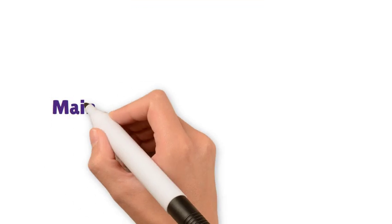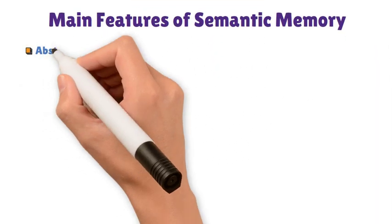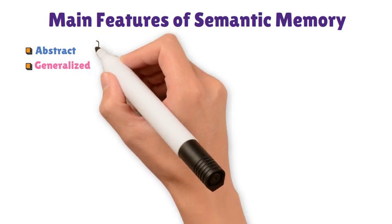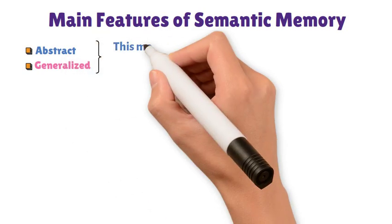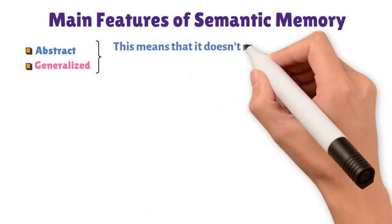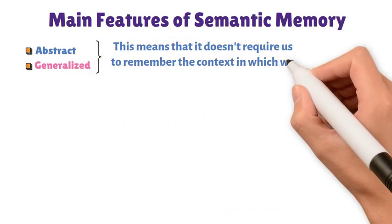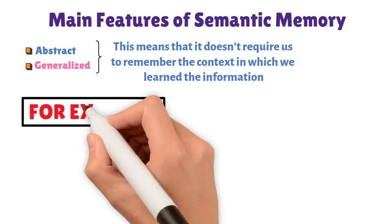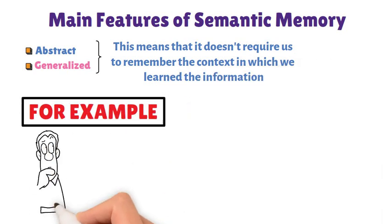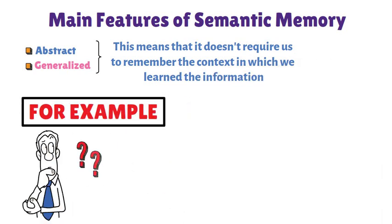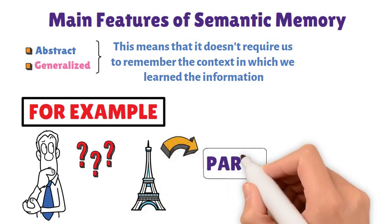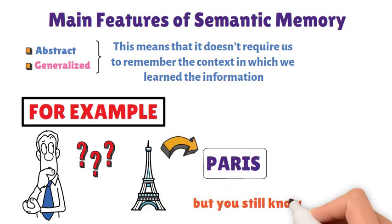One of the main features of semantic memory is that it is abstract and generalized. This means that it doesn't require us to remember the context in which we learned the information. For example, you may not remember where or when you learned that the Eiffel Tower is in Paris, but you still know this fact.